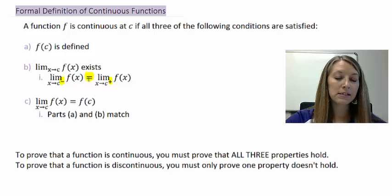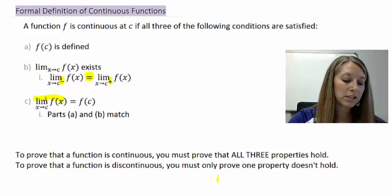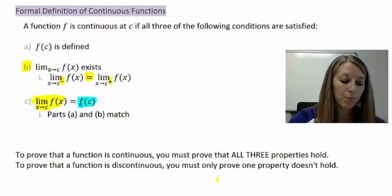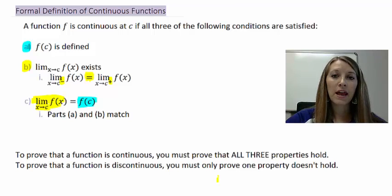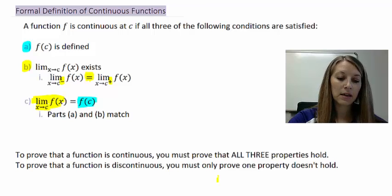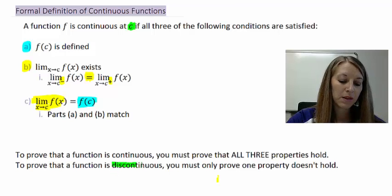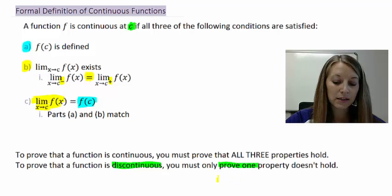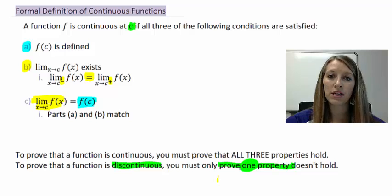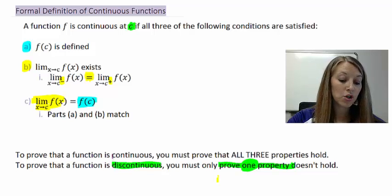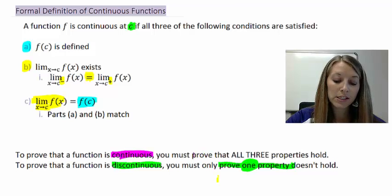Our third property says that the answers we get from part a and part b have to match up. So the limit portion of our definition, part b, has to match up with the function portion, part a. If we are trying to prove that a function is discontinuous at x equals c, you just have to disprove any one of these properties — disproving one property throws out the whole definition.